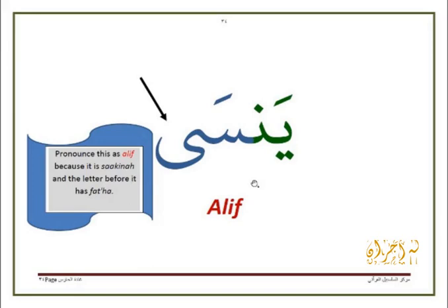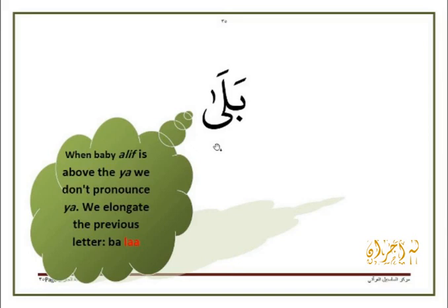In this word, the يَ has a dagger alif or a superscript alif. This dagger alif makes the يَ an الألف المقصورة and it is pronounced as an alif: بَلَى.